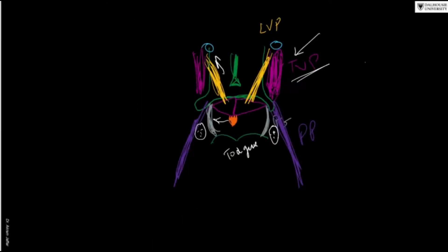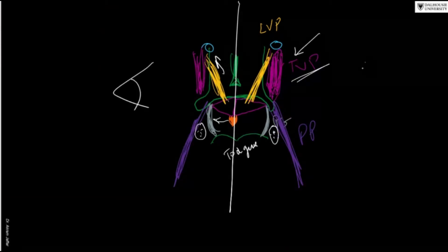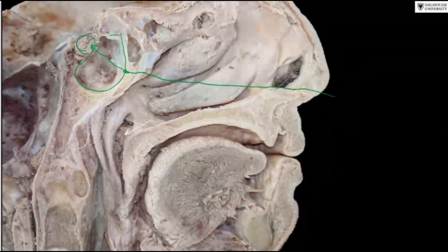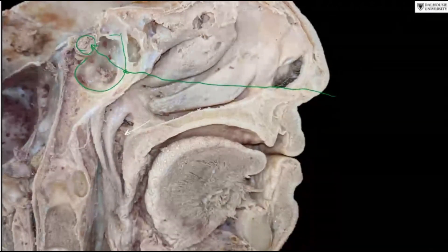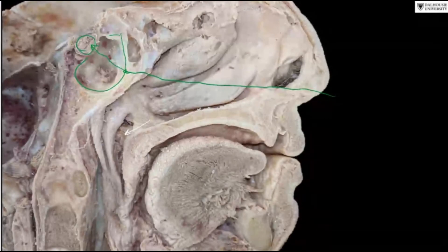In a mid-sagittal section of the head viewed from the side, the muscle fibers slanting downwards and medially above the palate are the levator veli palatini muscle, while the vertical muscle fibers in the background are the tensor veli palatini muscle. Here you can see muscle fibers slanting medially and attached to the soft palate — this is the levator veli palatini muscle.